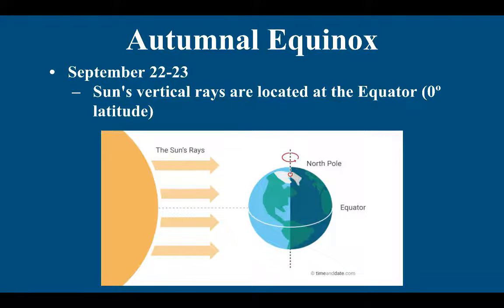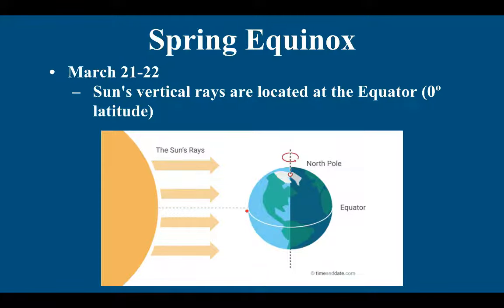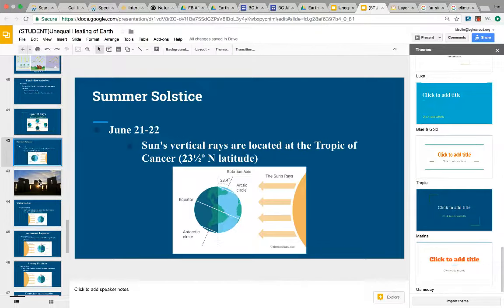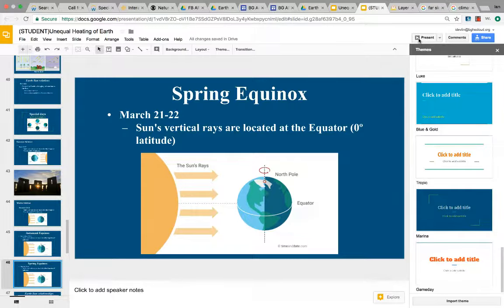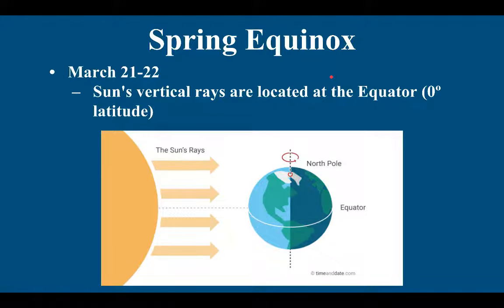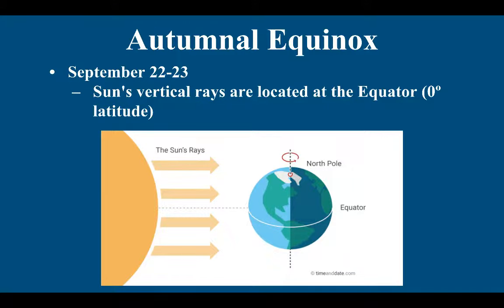In between our solstices we have our equinoxes. Our autumnal or fall equinox - equinox think equator. On the first day of fall on September 22nd or 23rd, the sun is directly hitting the equator, same as the spring equinox in March. For equinox, think equator and equal light. It doesn't matter if you're at the North Pole, the equator, or somewhere in between. Equinox means equal light - you're going to have both 12 hours of sunlight and 12 hours of darkness on any equinox, spring or autumn.